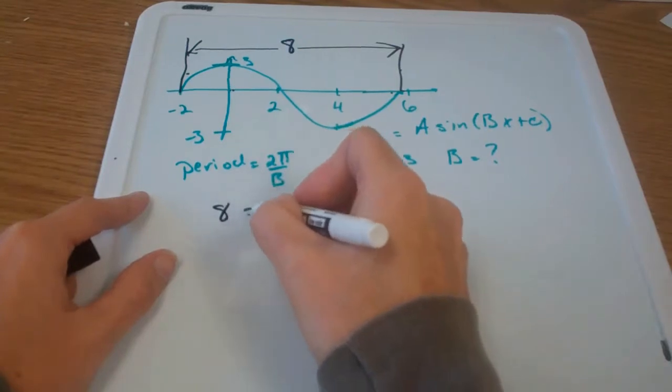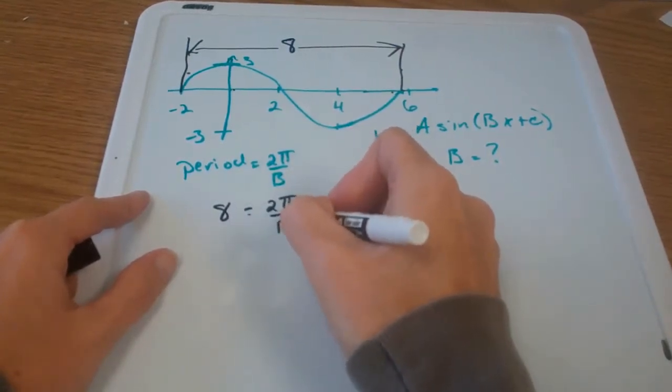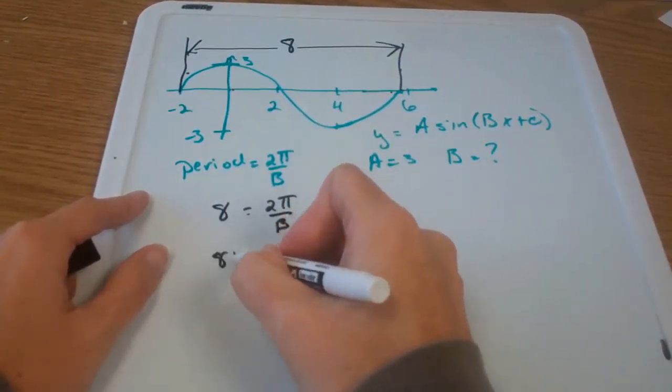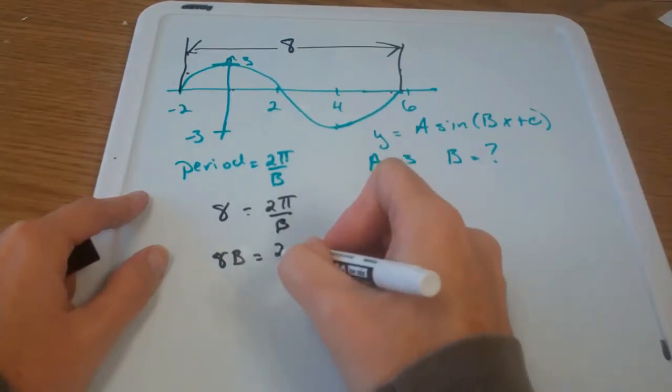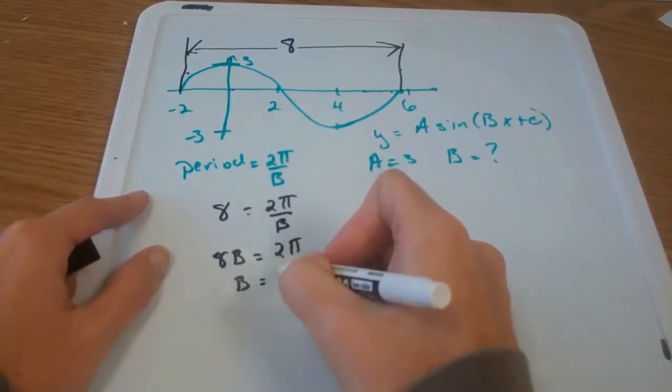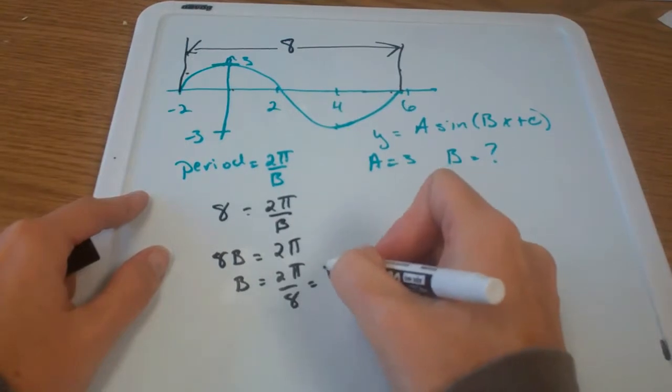I'm going to solve this now. 8 equals 2π over b. 8b equals 2π. So b equals 2π over 8 or π over 4.